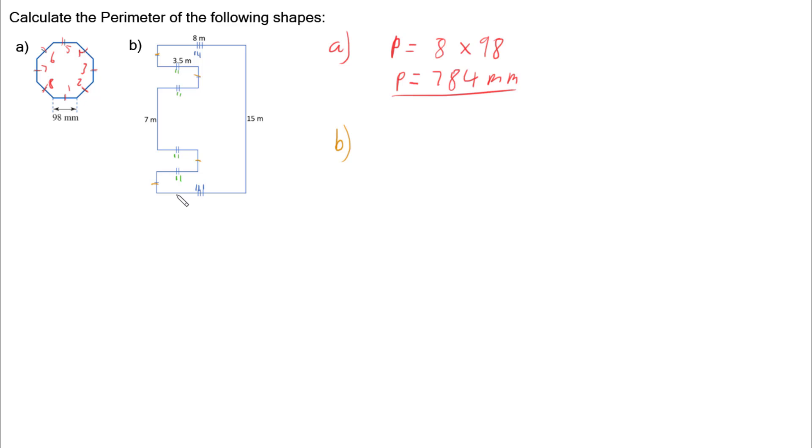So what we need to do is make sure we know the length of everything. We know this line here is 15. We know this line here is 8, same as this line, so this one is also 8. We know this side is 7. We know this side here is 3.5, which is the same as this. So it's 3.5, 3.5, 3.5.